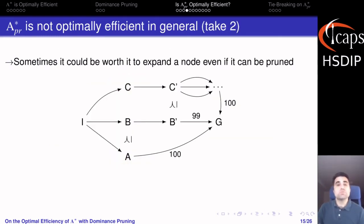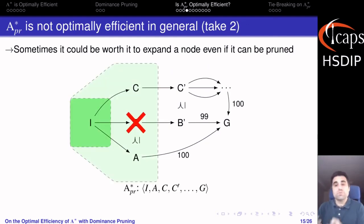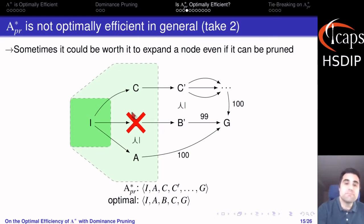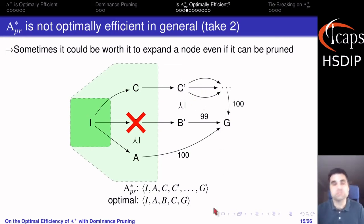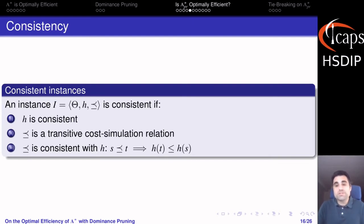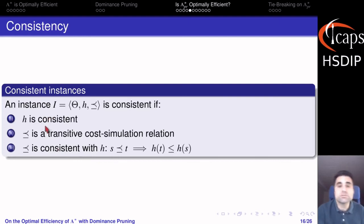Also, sometimes it could be worth expanding a node even if it can be pruned. In this case it's not about expansion order — as soon as we expand the initial state we prune state b because we must always prune pruneable nodes, meaning we never reach cb-prime and therefore must expand c-prime and all its successors. The optimal algorithm would instead invest one expansion on b to reach cb-prime and then avoid all the expansions of c-prime and its successors. This is not so different from the case of A-star's optimal efficiency, which also needed assumptions. This brought us to the question of what we need to assume here: consistent instances where not only the heuristic is consistent, but also the dominance relation is consistent and the dominance relation and heuristics are consistent with each other.